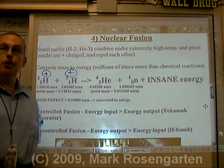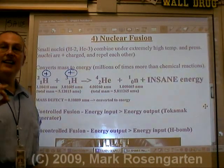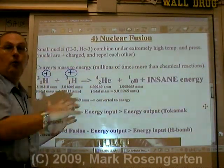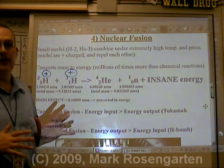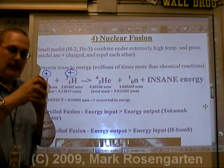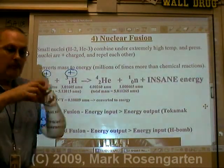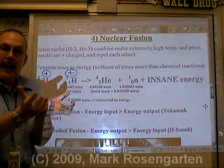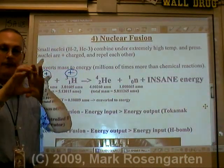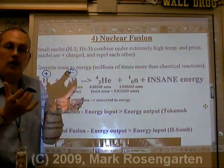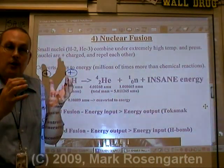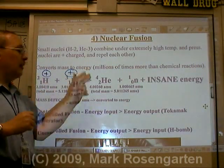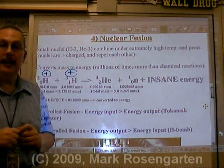Nuclear bombs — thermonuclear hydrogen bombs — rely on an uncontrolled fusion reaction. You've got the hydrogen fuel in the middle, with a fission reactor around it, so that when the fission reactor goes off, it creates enough pressure to fuse the hydrogen nuclei together.